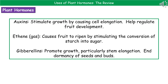A second thing that auxin will do is it can help regulate the development of fruit. Auxin isn't the only hormone involved — we've also got two others. Ethene, which is a gas, causes fruit to ripen by stimulating the conversion of starch into sugars. And gibberellins, which promote growth, particularly the elongation of stem cells.